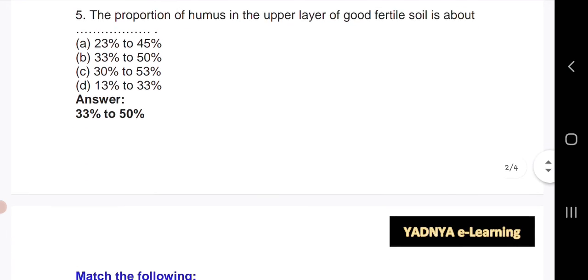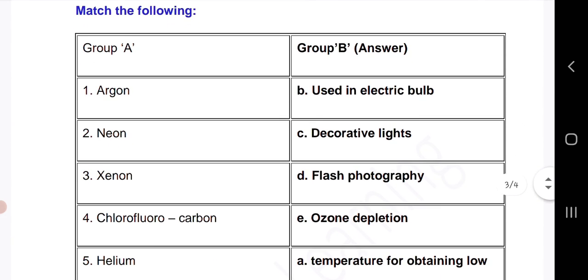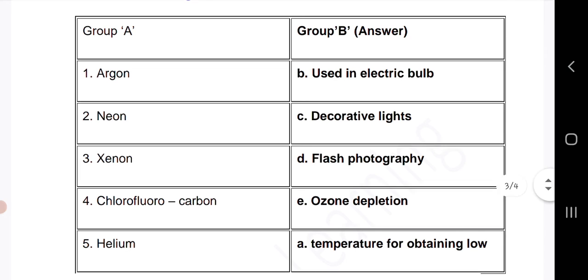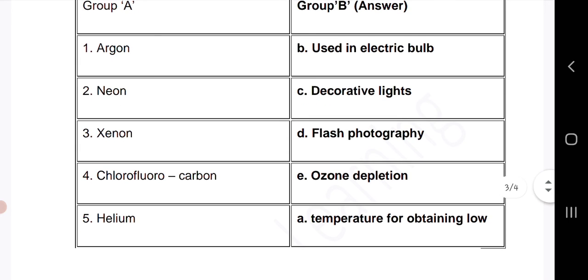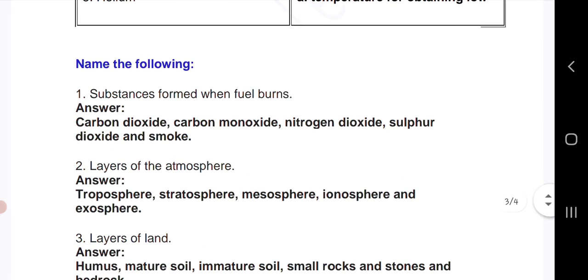Match the following. Argon is used in electric bulb. Neon in decorative lights. Xenon in flash photography. Chlorofluorocarbon in ozone depletion. Helium for obtaining low temperature. Now move to next question.